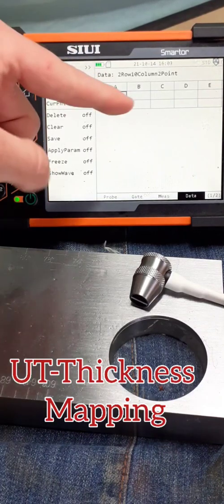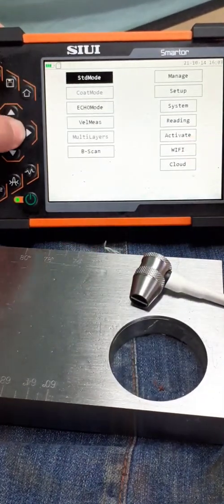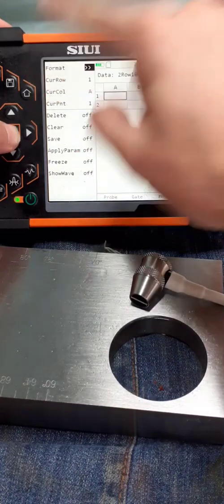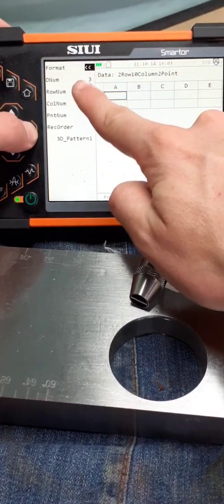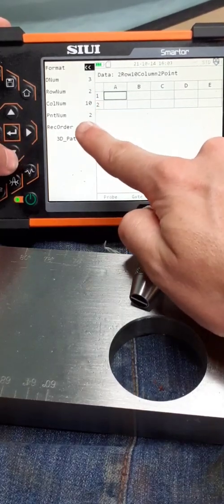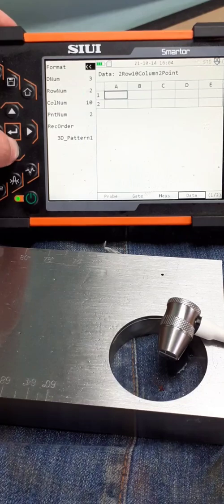We can see here that we've currently got set up. Let's move this menu function up to here on the left, move this up to here, confirm there. Say what format are we going to do it in? We can do it by date of numbers, row numbers, column numbers, point numbers. Let me show you here a three-dimensional pattern.